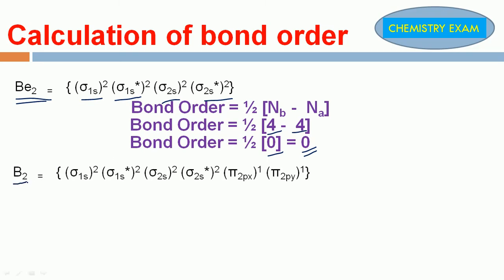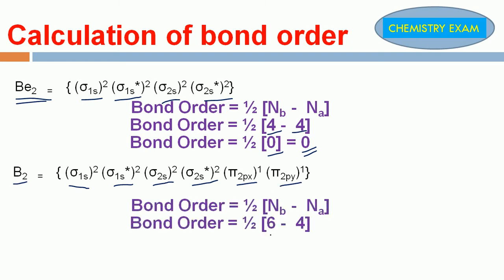Next, B₂. What is the electronic configuration for B₂? Sigma 1s², sigma star 1s², sigma 2s², sigma star 2s², pi 2px¹, pi 2py¹. How many bonding electrons? 6. How many anti-bonding electrons? 4. So 1/2 into (6 minus 4) equals 1/2 into 2 equals 1. The bond order for B₂ molecule is 1.